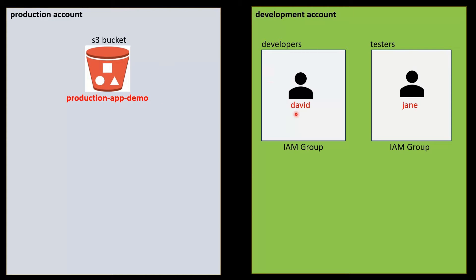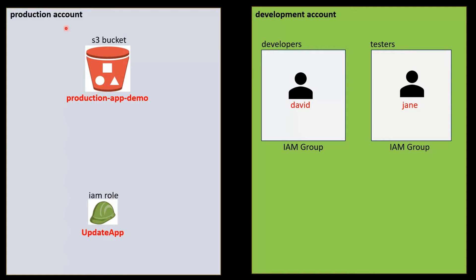But from time to time, our developer David needs to update the live application in the Production account, for which he needs to upload the new application version to our S3 bucket in the Production account. To achieve this, we need to create an IAM role in the Production account. The name of the IAM role would be UpdateApp, and this IAM role would have permission to view, update, and delete objects from this S3 bucket.